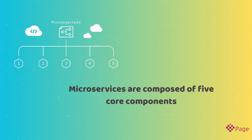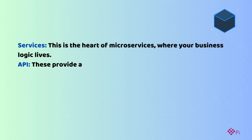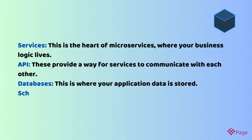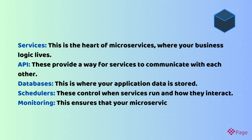Microservices are composed of five core components. Services: this is the heart of microservices, where your business logic lives. APIs: these provide a way for services to communicate with each other. Databases: this is where your application data is stored. Schedulers: these control when services run and how they interact. Monitoring: this ensures that your microservices are running properly and collect data for analysis.